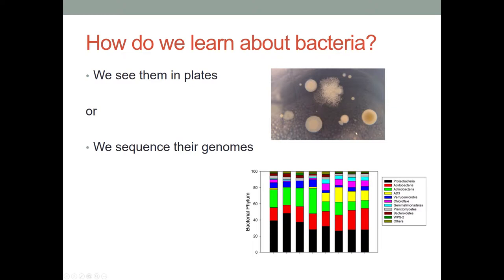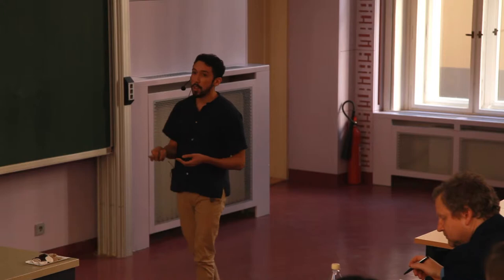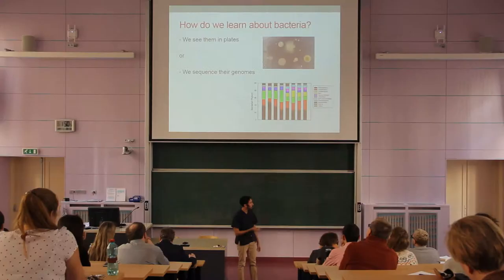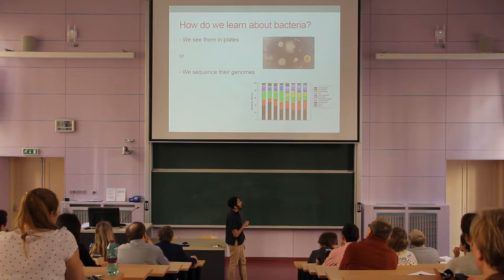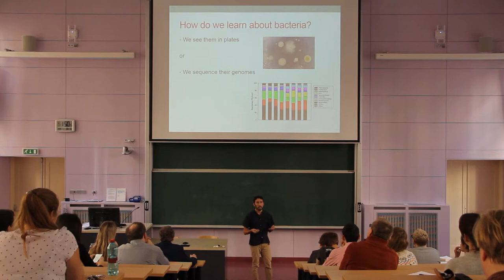Nowadays there are two ways of studying microbes. Either we can culture them — we can see them on plates, we have plates with bacteria. Or we can extract the total DNA of soil and sequence it, and so we can obtain the specific identities of the bacteria contained in the soil. This is called metagenomics. You have information on the relative abundances of specific taxa of bacteria, and you can take a picture of the community without culturing bacteria.